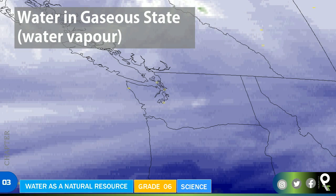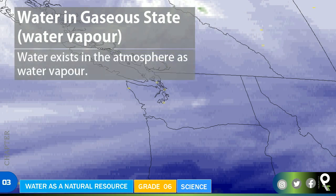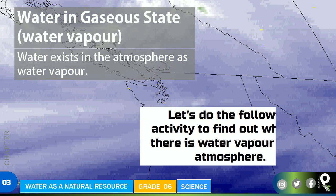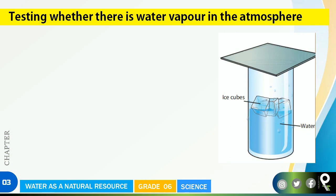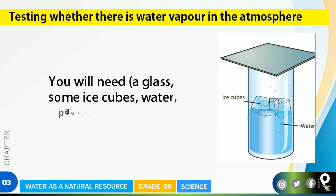In the environment, water is in the gas state as water vapor. Now let's do the following activity to find out whether there is water vapor in the atmosphere. To test this, you will need a glass, some ice cubes, water, and a piece of cardboard. Set up the apparatus by putting ice cubes into the water in the glass and placing the cardboard piece on top.